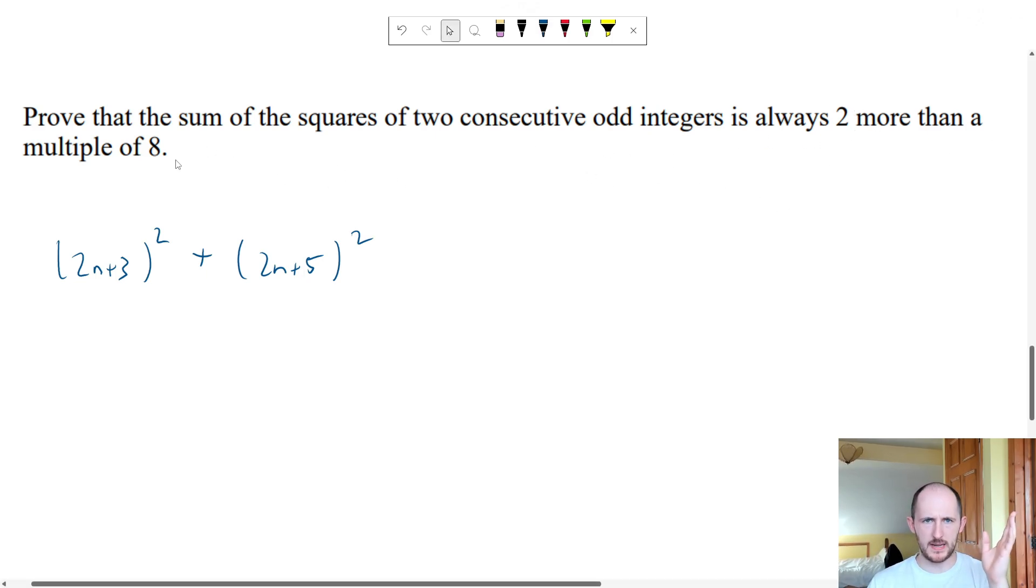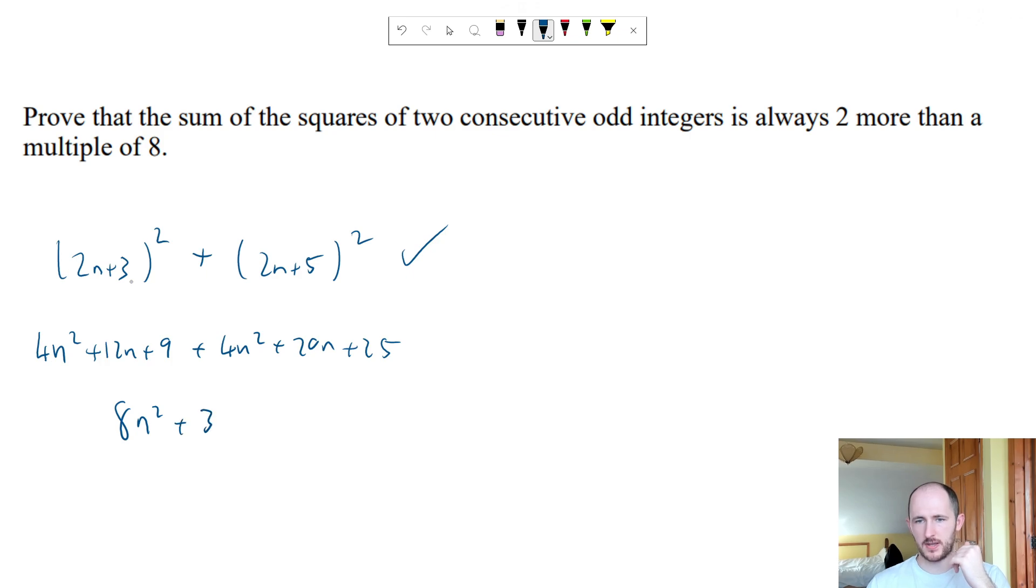And then it says it's always two more than a multiple of 8. That part might seem a bit weird but first of all if you just do the expansion and simplifying you get most of the marks anyway. So expanding this we would get 4n squared plus 12n plus 9 then plus 4n squared plus 20n plus 25. So then we get 8n squared plus 32n plus 34.